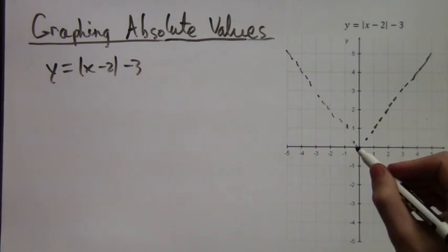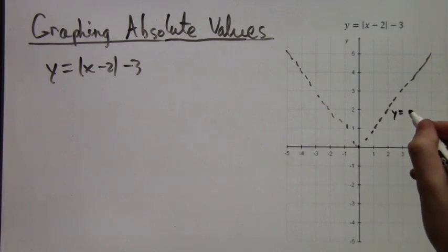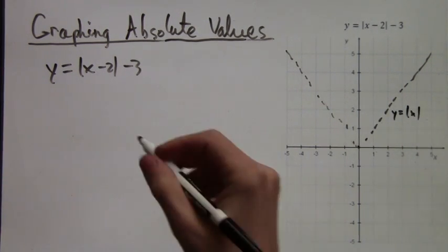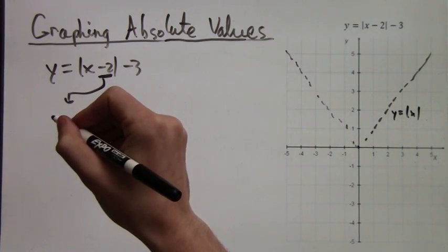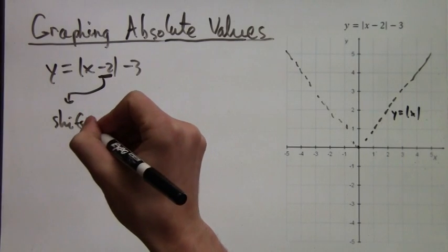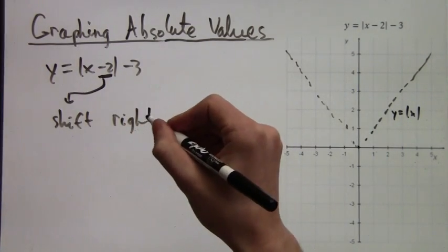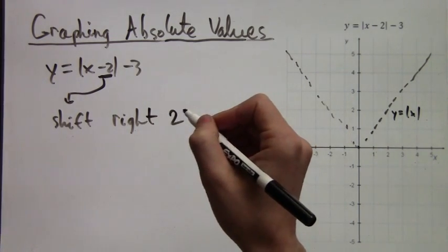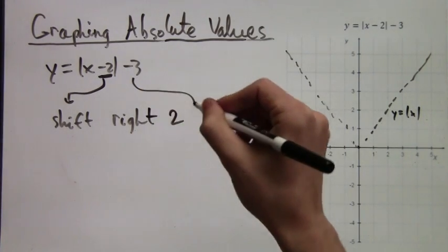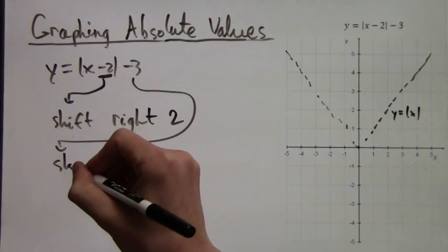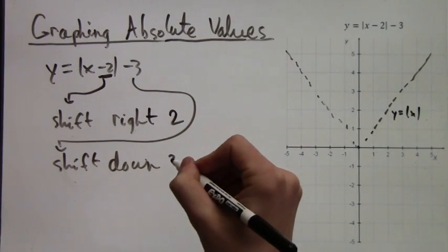Now, we have two shifts here. One of them is a shift in the x direction, and one of them is a shift in the y direction. So the negative 2 by the x means that we're shifting the graph to the right by 2 units. And then the minus 3 outside of the absolute value bars means we are shifting downwards 3 units.